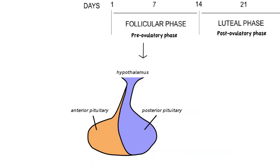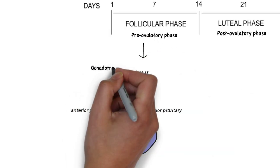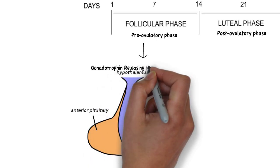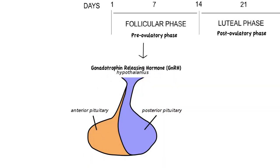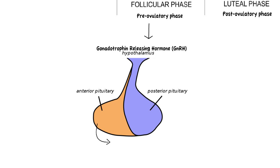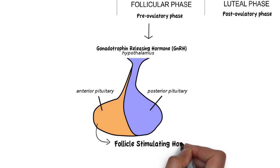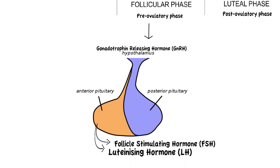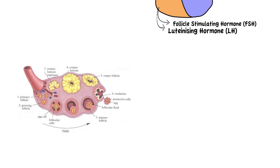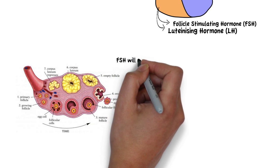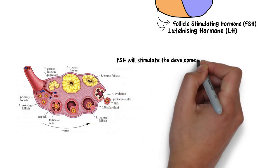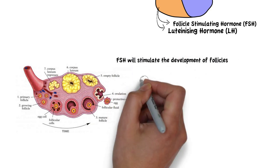In the follicular phase, neuroendocrine cells in the hypothalamus secrete gonadotrophin-releasing hormone, or GnRH, in a pulsatile manner. GnRH, in turn, stimulates the anterior pituitary to secrete follicle-stimulating hormone and luteinizing hormone. These hormones travel to the ovaries, where follicle-stimulating hormone, as its name implies, will stimulate the development of follicles.